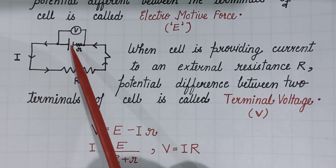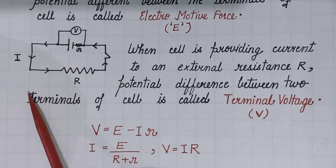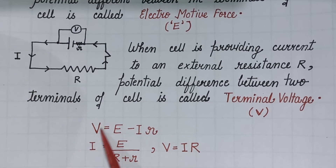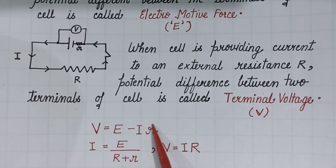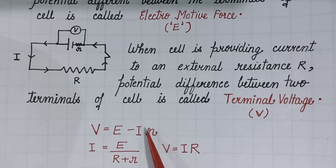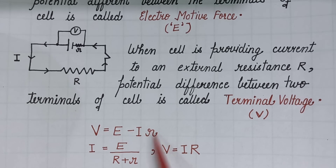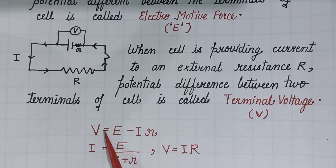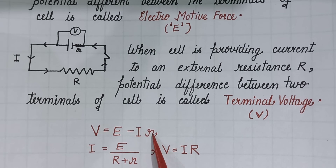Some of the energy is wasted across the internal resistance of the cell. So terminal voltage will be EMF minus potential drop — that is, energy wasted as potential drop across the internal resistance of the cell. Terminal voltage V will be equal to E minus the current provided by the cell multiplied by the internal resistance of the cell: V = E − Ir.